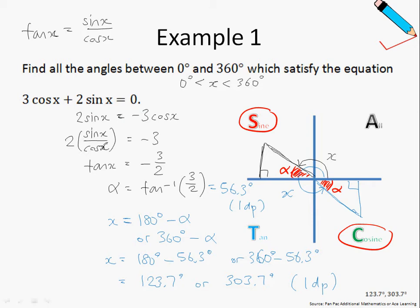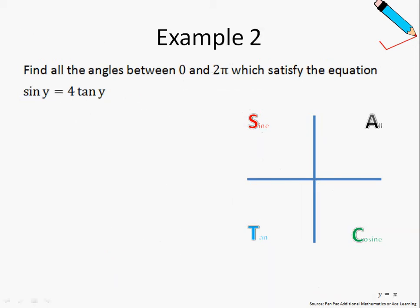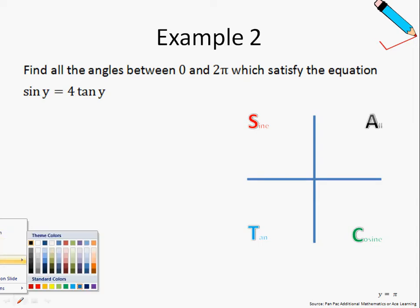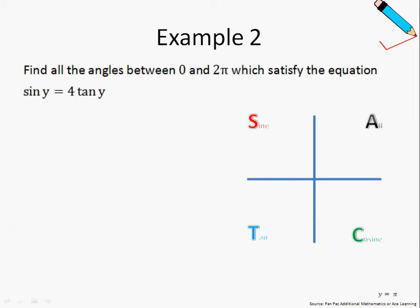That's all for example number one. Moving on to example number two, we are asked to find all the angles within 0 to 2π which satisfy this equation. This means that our variable y is between 0 to 2π. To solve this, note that tan y equals sin y over cos y.